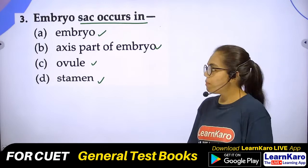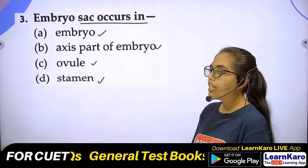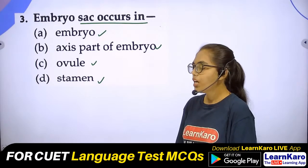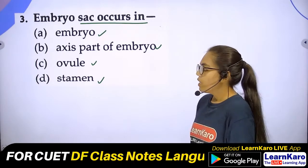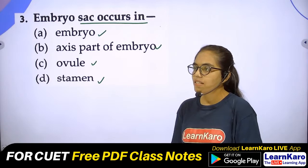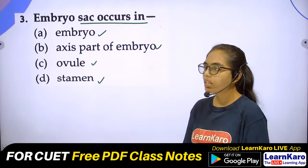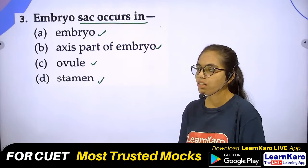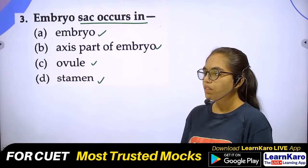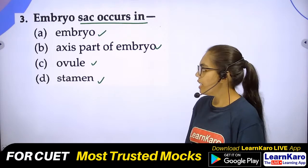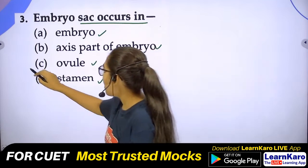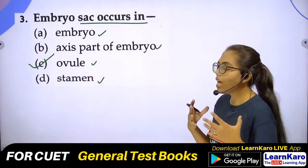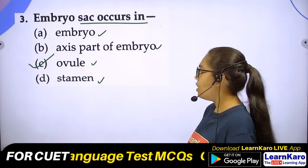Question number 3: Embryo sac occurs in? Shivam Tripathi — correct answer. Pramit Mishra — C — correct! The correct answer is Option C. The embryo sac is present in the ovule, and the ovule is present inside the ovary.